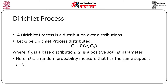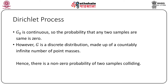In the notes you will find various Gaussian setups as G_0. If you choose a Gaussian as your base distribution and G is Dirichlet process with parameters alpha and G_0, you can get various scenarios as indicated in the class notes. G_0 is continuous, so the probability that any two samples are the same is zero. However, G is a discrete distribution made up of a countably infinite number of point masses, and hence there is a non-zero probability of two samples colliding.